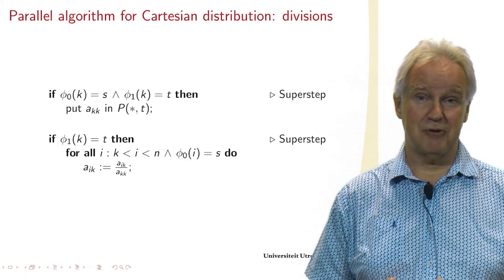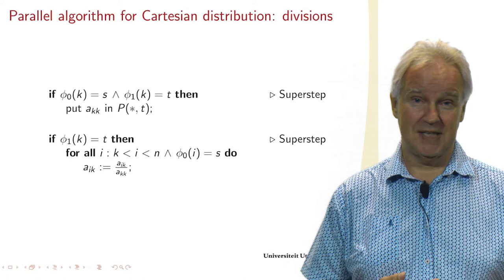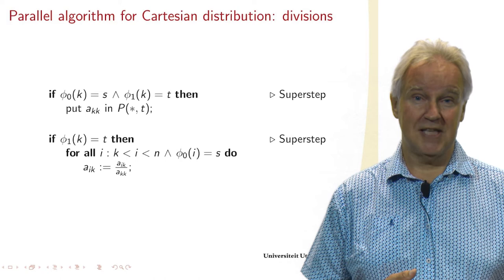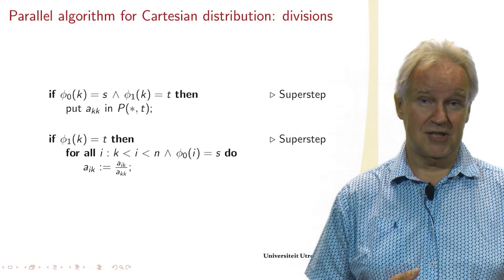And that's how we design an algorithm backwards, because the first superstep that we then insert puts AKK in all the processors that need it.